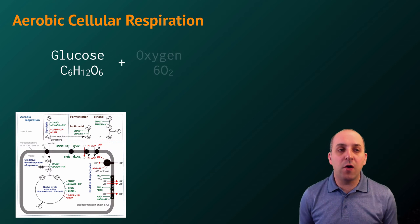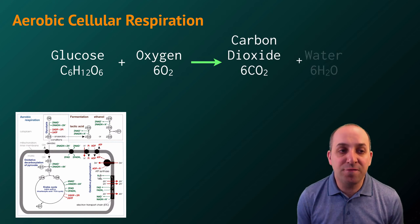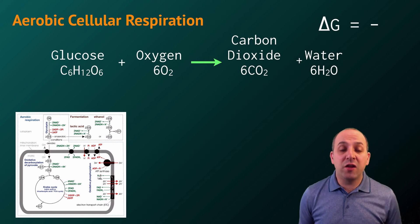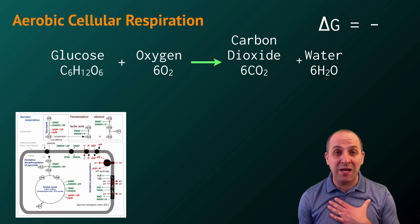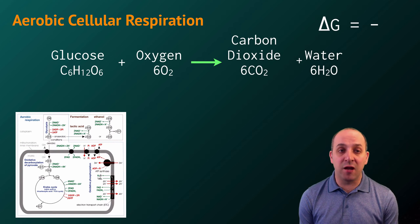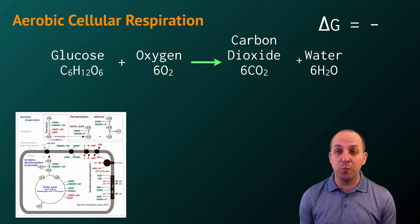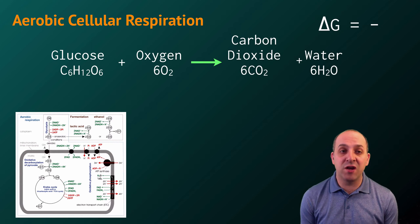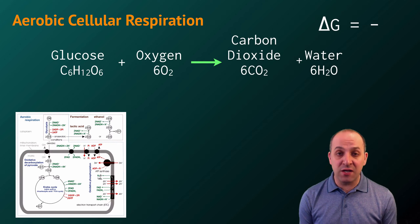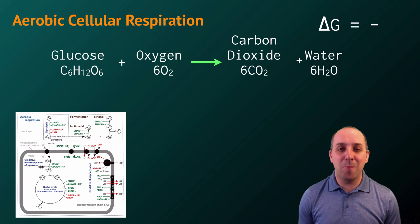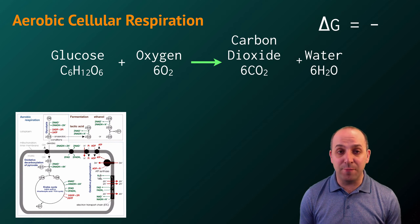It's typical when talking about aerobic cellular respiration to focus on glucose as the molecule we start with, so that's what we're going to do in this video. But it's important to understand that all food molecules that we eat can be used in aerobic cellular respiration to produce energy. Like any respiration, aerobic cellular respiration is an exergonic process that releases free energy into the system that can be used to drive cellular work — in this case, primarily the production of ATP.